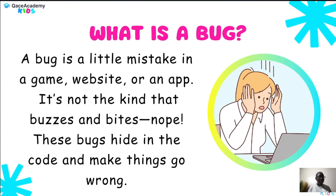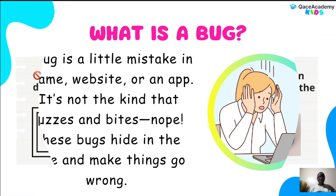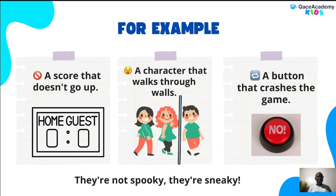What's a bug? A bug is an error that can get stuck in a game, website, or app. It's not the kind that crawls around. No — bugs hide in the code and make things go wrong. For example: a score that doesn't go up, a character that walks through walls, or a crash that ends the game. They're sneaky!